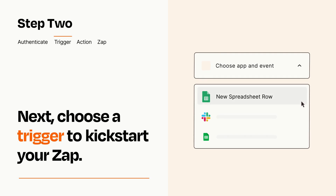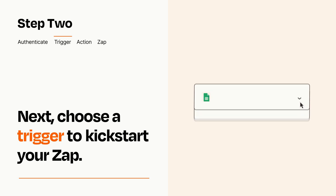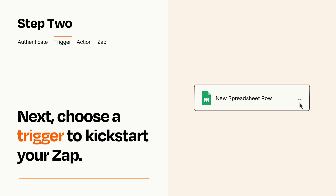Now let's set up your trigger, which is the event that starts your Zap. Pick the trigger event that you want from the list. When you set up this step, your Zap will pull in test data from your trigger app that you'll see later when setting up your action app.